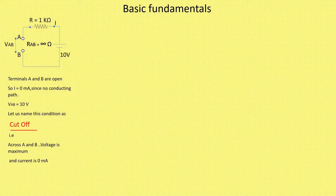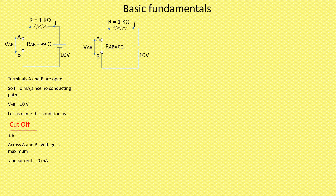Now let us go to the second term, that is saturation. We will draw the same diagram. The only change made is we are now shorting the terminals A and B. If I now calculate the current I, current I would be equal to 10 volts divided by 1 kilo ohm, that is equal to 10 milliampere.